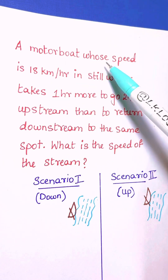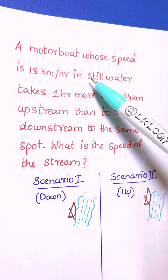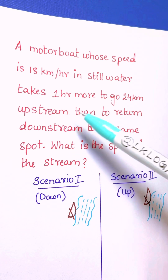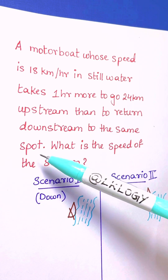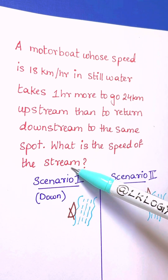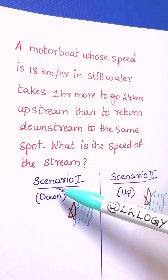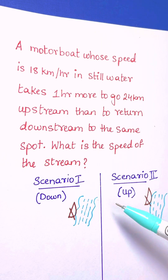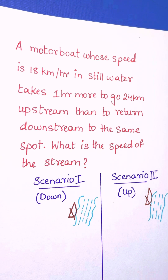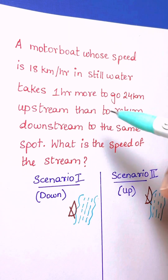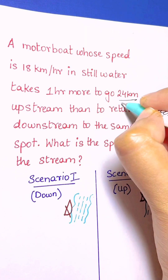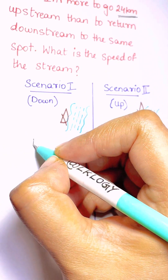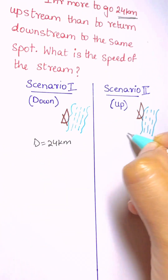A motorboat whose speed is 18 kilometers per hour in still water takes one hour more to go 24 kilometers upstream than to return downstream to the same spot. What is the speed of the stream? We have two scenarios: scenario one is downstream and scenario two is upstream. The distance given is 24 kilometers both ways.